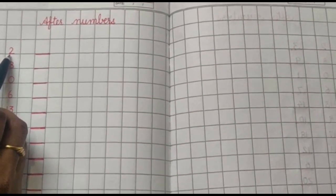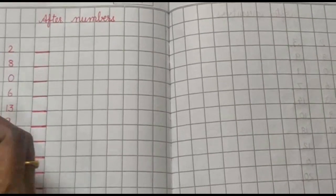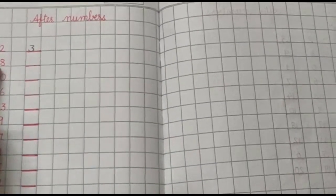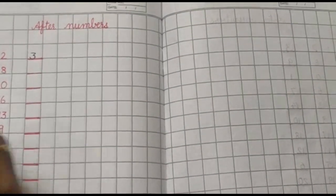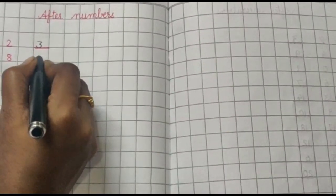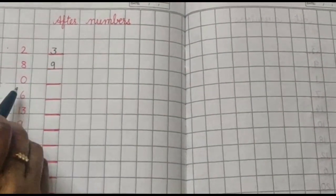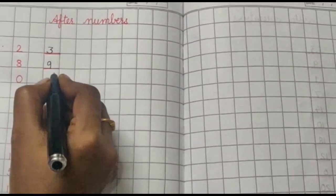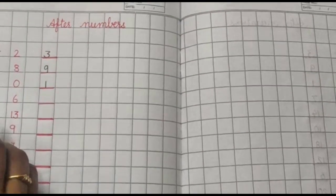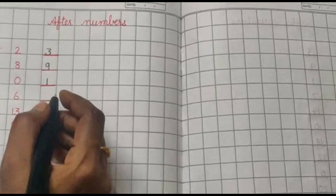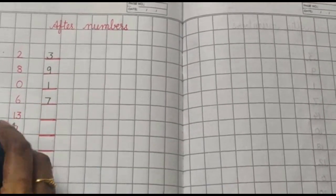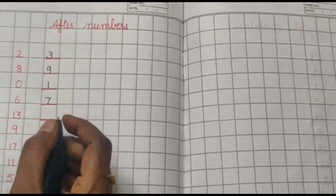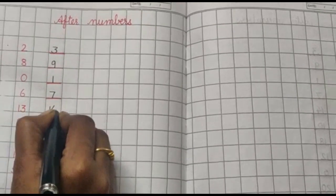Two. What will come after two? Three. Very good. Read the next number. Eight. After eight, nine. Read the next number. Zero. After zero, one. Six. After six, seven. Read the number. Thirteen. After thirteen, fourteen. Excellent.